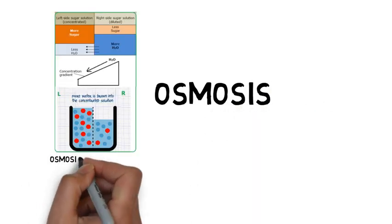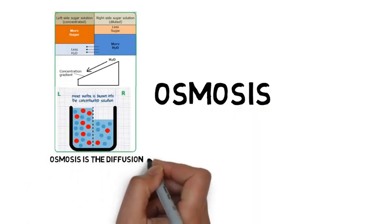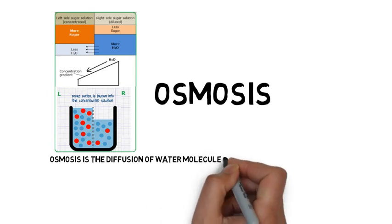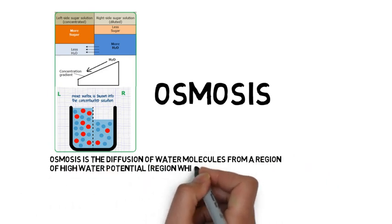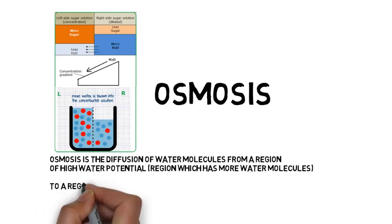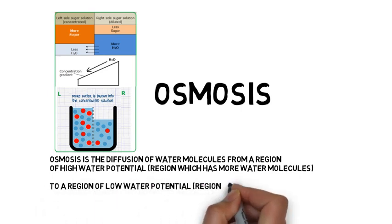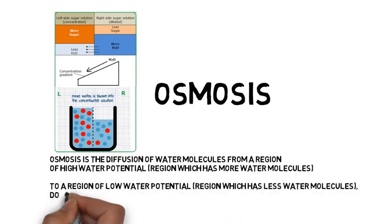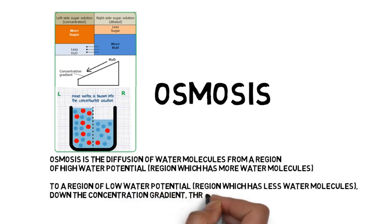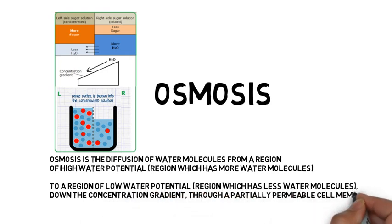Osmosis. Osmosis is the diffusion of water molecules from a region of high water potential, region which has more water molecules, to a region of lower water potential, a region which has less water molecules, down the concentration gradient through a partially permeable cell membrane. Here is a diagram to explain.